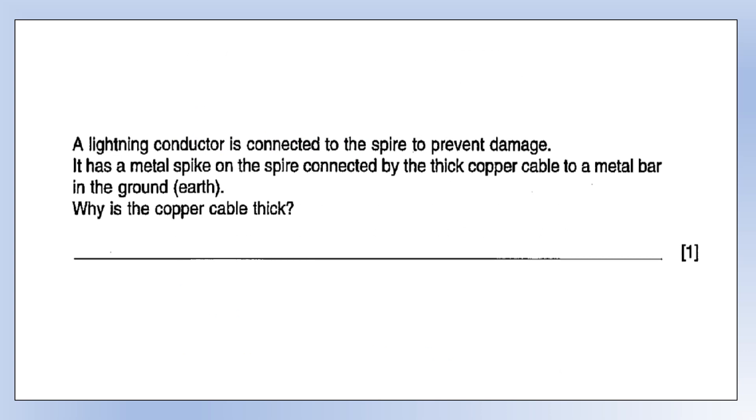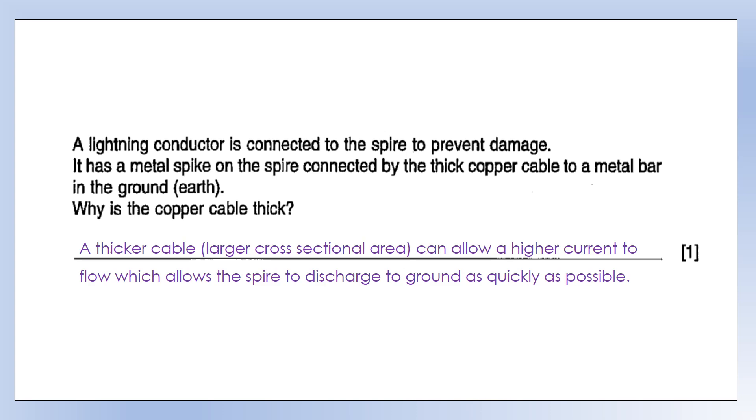The lightning conductor is connected to the spire to prevent damage. It has a metal spike on the spire connected by a thick copper cable to a metal bar in the ground, which is the earth point. Why is the copper cable thick? A thicker cable has a larger cross-sectional area, so that can allow a higher current to flow, so it's going to discharge to the ground more quickly. That's going to minimize any possible risk.